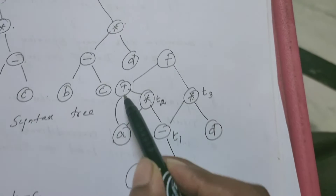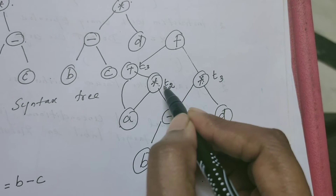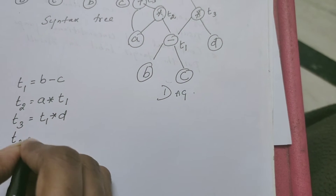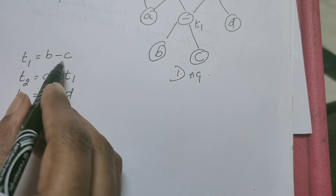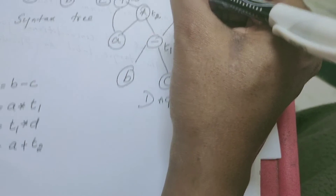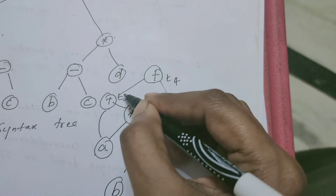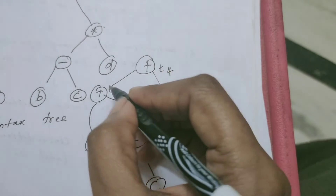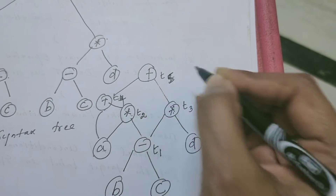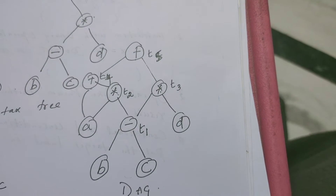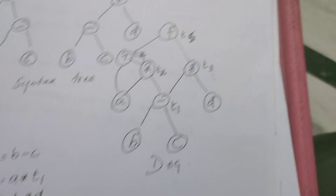Now after this, the next operation is carried out. T3 is equal to A plus T2, where T2 is A into T1, and T1 is B minus C. Finally, let me call this node T4, and T5 is T4 plus T3. So T5 is equal to T3 plus T4, either way we can write. So this is the three address code.